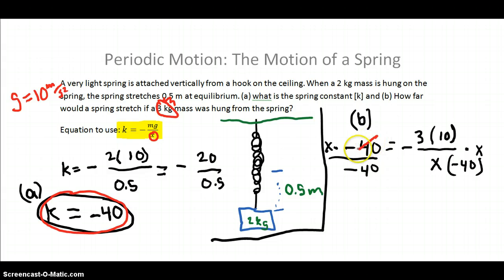Now, essentially what happens here is, for those of you who still struggle with algebra, negative 40 cancels, and x cancels. So, what we're left with is the equation x is equal to negative 30 over negative 40, which is equal to 0.75 meters.